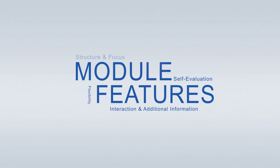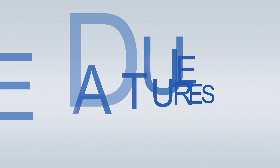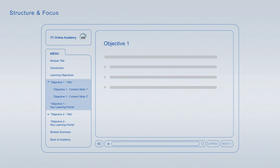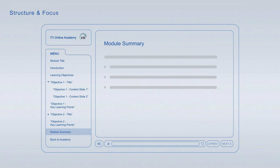ITI Online Academy Learning Modules offer a wide variety of features to optimise your learning. Every module starts off with an introduction followed by the learning objectives, giving you an overview of the main topics and learning goals covered. Each learning objective is discussed in an individual topic chapter that concludes with a list of its key learning points. The summary at the end of each module combines the major key learning points across all learning objectives for final repetition and focus.